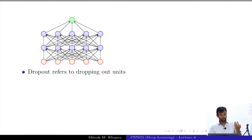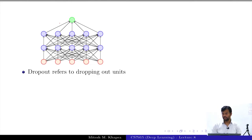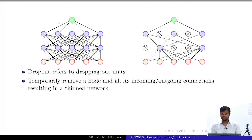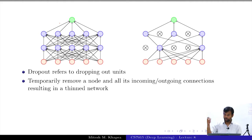Dropout actually refers to dropping out units from the neural network. Starting with the original neural network, dropout says you drop out some neurons, and when you drop out some neurons you also drop out the incoming and outgoing edges from those neurons, effectively creating a new network architecture.